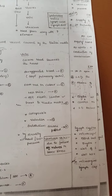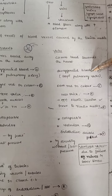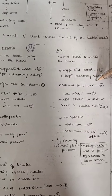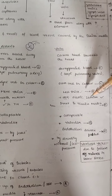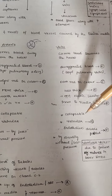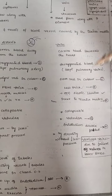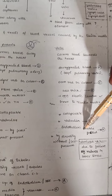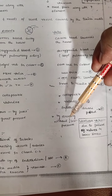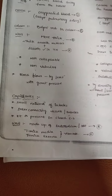Veins carry the blood towards the heart and carry deoxygenated blood, except pulmonary veins. They have a dark red color, less thick walls, one elastic lamina in the tunica media, are collapsible, and have valves. Veins have walls — lymphatic vessels also have walls with a double-folded endothelial layer. Blood flow in veins is steady and with less pressure.